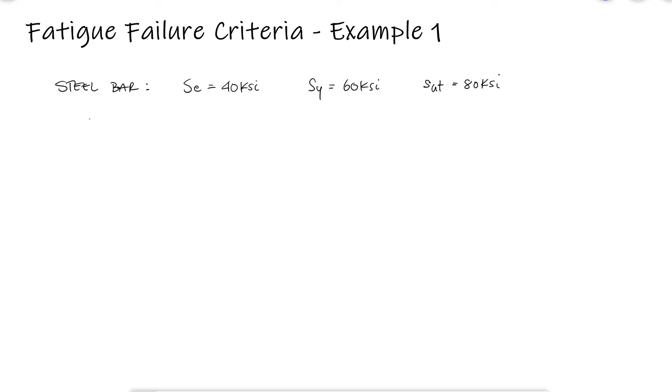The bar is subjected to a steady torsional stress of 15 ksi and an alternating bending stress of 25 ksi. What is the factor of safety against fatigue failure using the Goodman criterion, the Gerber criterion, and the Morrow criterion?